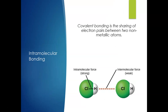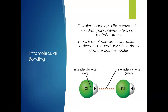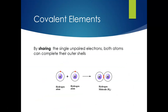The way they do this is they share electron pairs between the two of them. There's then an electrostatic attraction between a shared pair of electrons and the positive nuclei. By sharing the single unpaired electrons both atoms can complete their outer shell. If we look at hydrogen, it only has one electron in its outer shell and it wants two to fill that shell up. So you get two hydrogen atoms that share electrons — each hydrogen atom then has two electrons — and we get the molecule H2, two atoms of hydrogen.